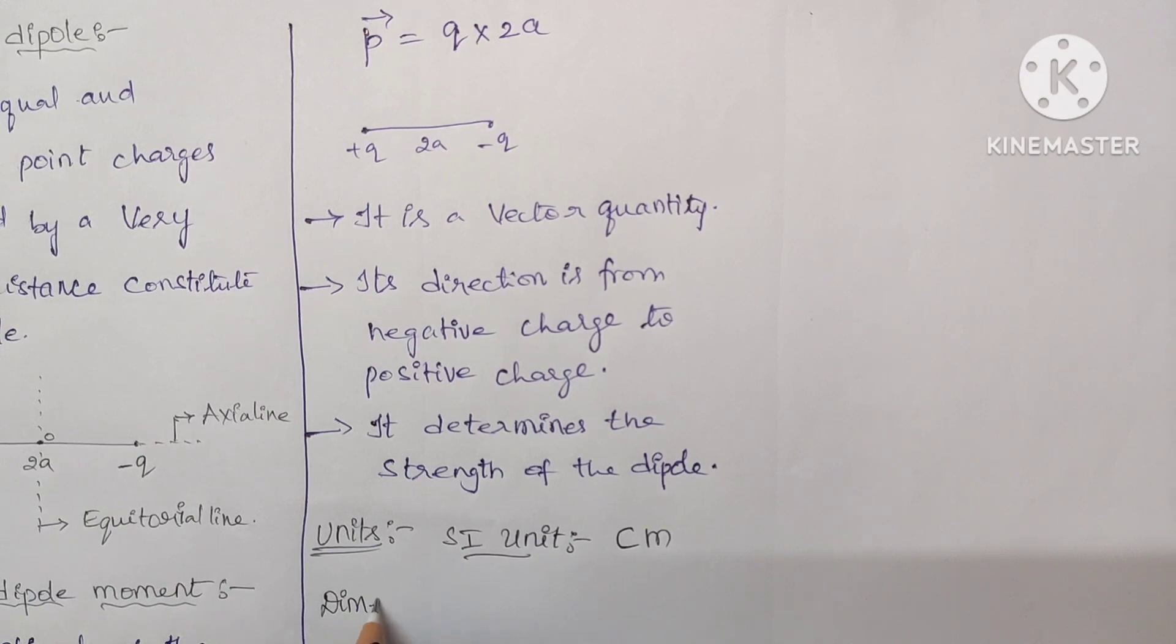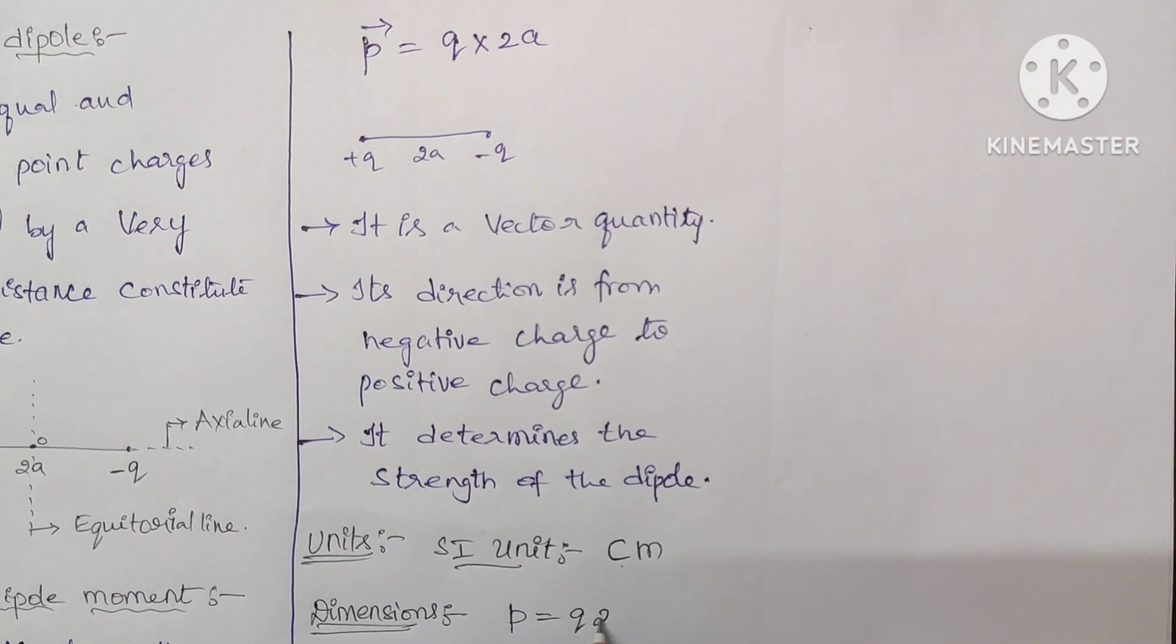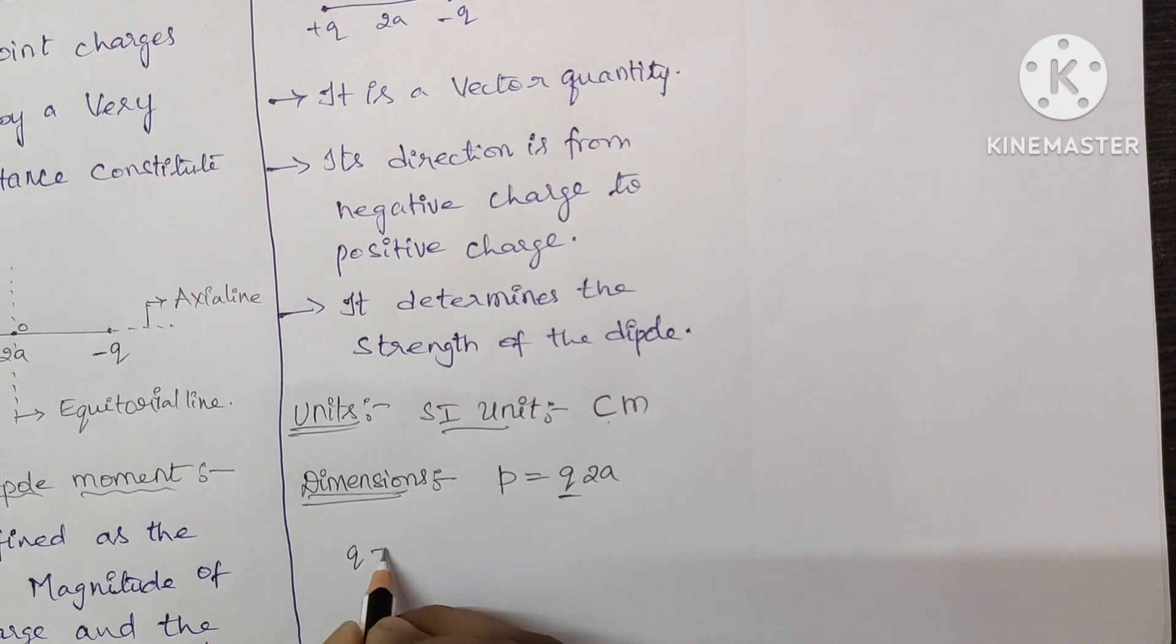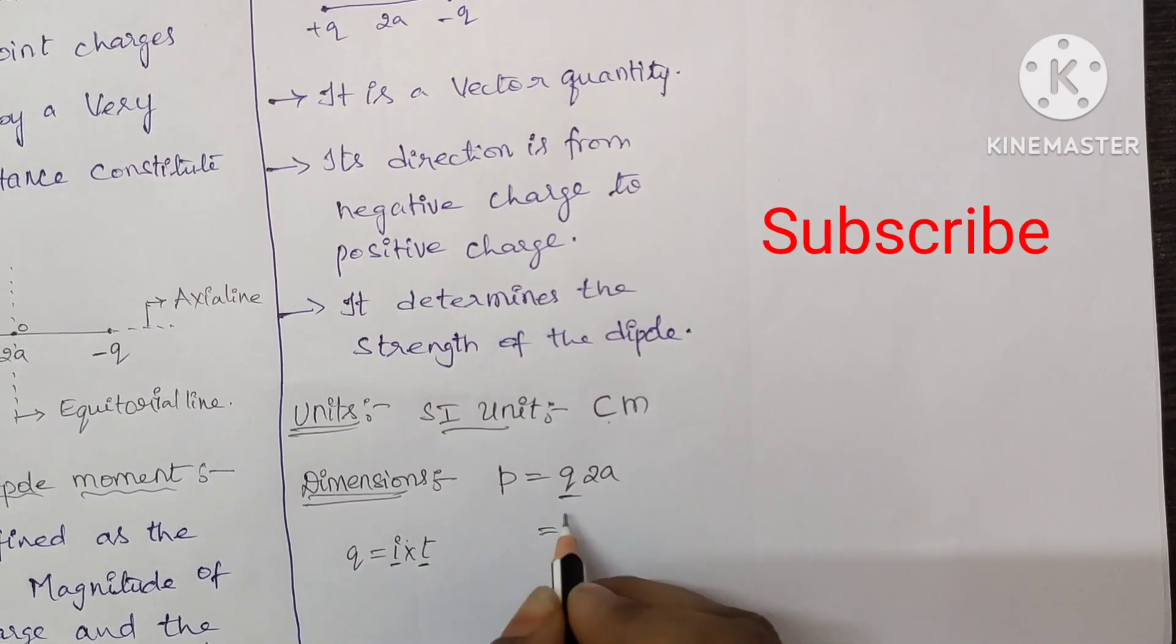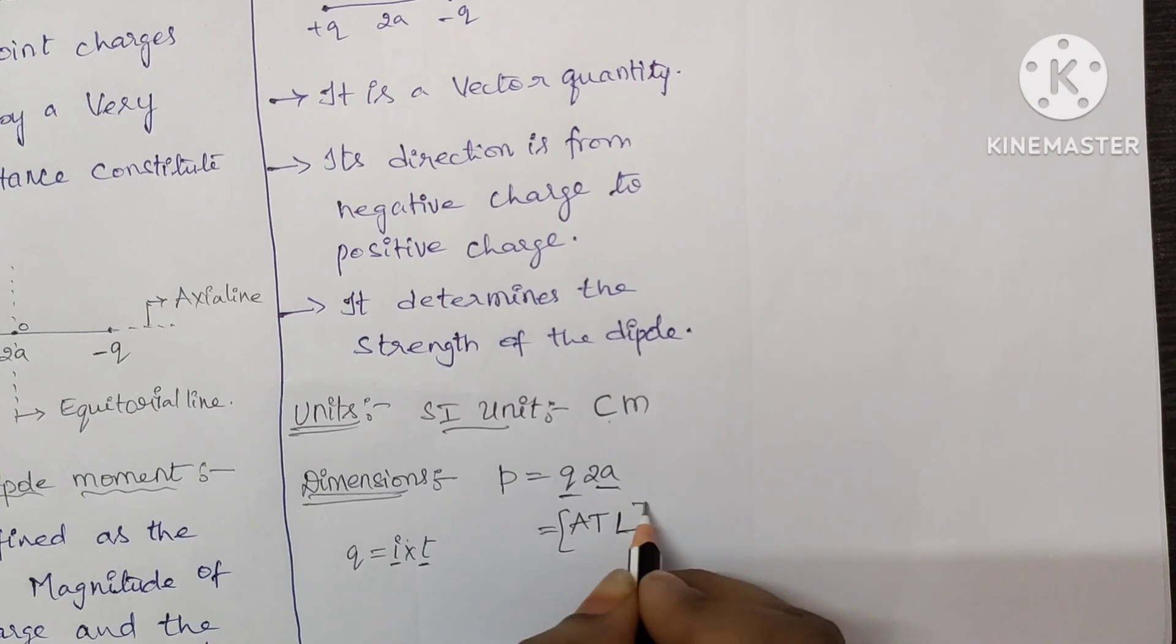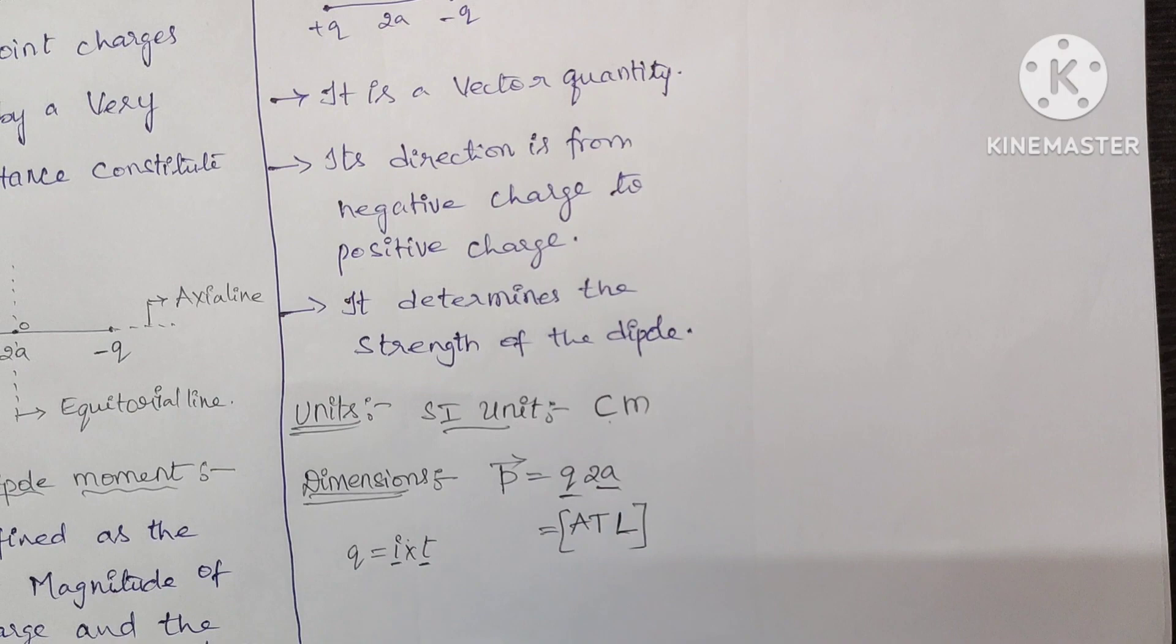Next, dimensions. We know that P is equal to Q into 2A. Here Q is charge so we know that Q equal to I into T. Here I is current and T is time. So A, T and 2A is the length of the dipole so L. This is the dimensional formula of electric dipole moment.